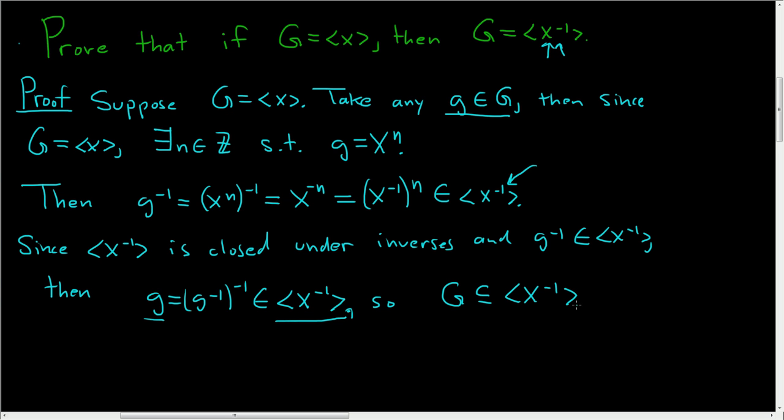And the other inclusion is obvious. So G is generated by the cyclic group, rather generated by x inverse. And that is the proof. I hope this helps.